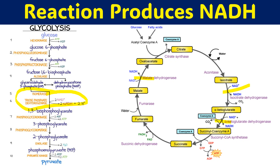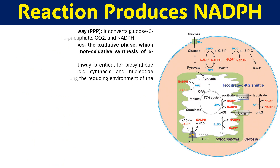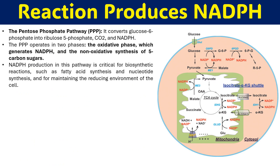There are also a number of other processes where NAD+ is converted to NADH. Regarding reactions that produce NADPH: one important process is the pentose phosphate pathway — also called the hexose monophosphate shunt — which converts glucose-6-phosphate to ribulose-5-phosphate, carbon dioxide, and NADPH.